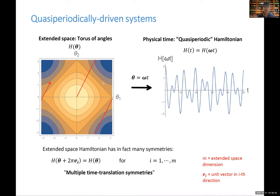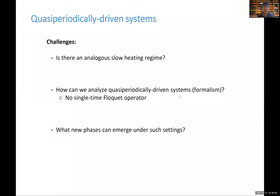The key questions for quasi-periodic systems are: first, is there an analogous slow-heating regime in which we can define phases? Second, how can we analyze quasi-periodically driven systems, since there is no single-period Floquet operator to iterate? And third, what new phases can emerge? Even though the Fourier spectrum of a quasi-periodic drive is dense — the system can absorb or emit photons in quanta of N dot omega for any integer vector N — this does not necessarily mean heating is fast.